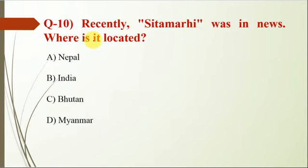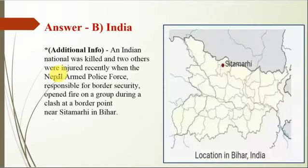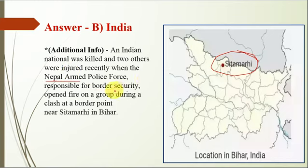Question number 10: Sitamarhi was recently in the news. Where is it located? The correct option is B — it is located in Bihar, India. It was in the news because an Indian national was killed and two others were injured when the Nepal Armed Police Force, responsible for border security, opened fire on a group during a clash at a border point near Sitamarhi in Bihar.